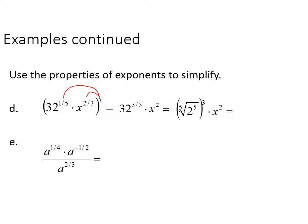Simplifying using radical rules, we get two to the third times x squared. Remember: with a fractional exponent, the denominator is your root and the numerator is your power. So three-fifths means the fifth root of 32, which equals two — since two to the fifth is 32 — raised to the third power. Taking the root and multiplying by the same radical frees the number inside, giving eight times x squared.